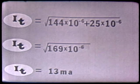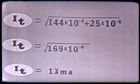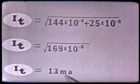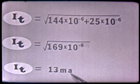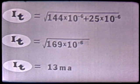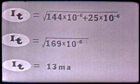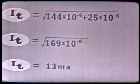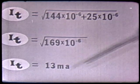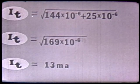Extracting the square root of 169 gives 13. The square root of 10 to the negative 6 is 10 to the negative 3, which is milli, and our current is in amperes. So once again, we have determined our total current using the Pythagorean theorem, and our total current comes out to be 13 milliamperes.